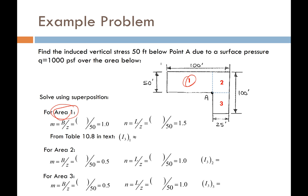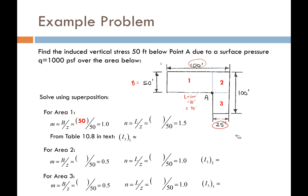For rectangle number 1: the long dimension L is 100 feet minus 25 feet, giving L = 75 feet, and B = 50 feet. That gives M = B/Z = 50/50 = 1, and N = L/Z = 75/50 = 1.5. Using the isobar chart, going to M of 1 and interpolating up to N of 1.5, it looks to be around 0.197.